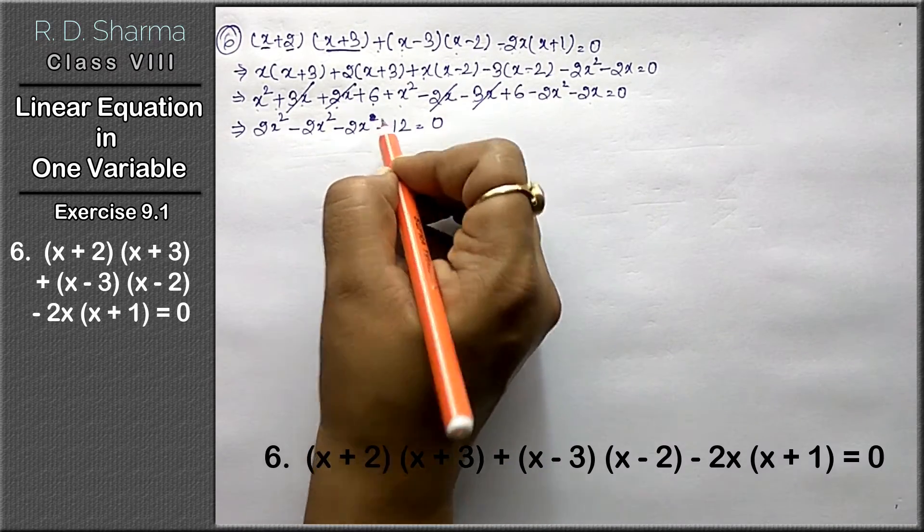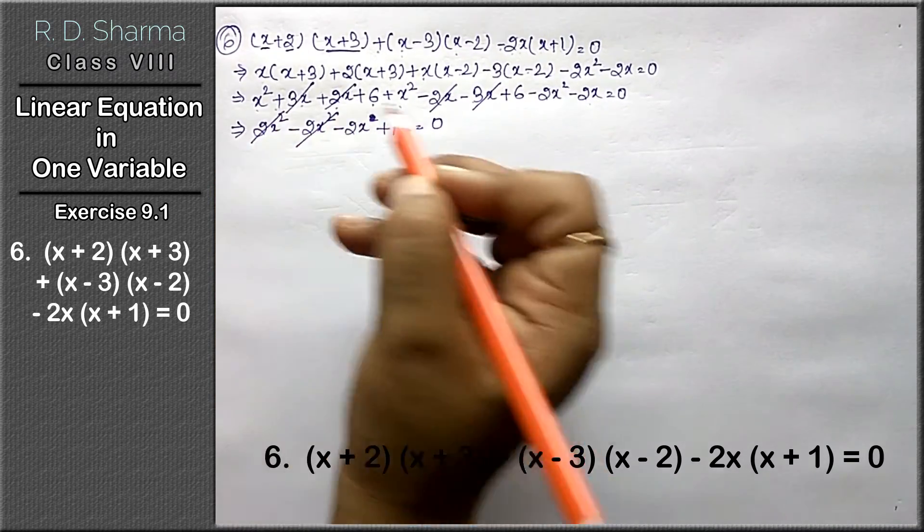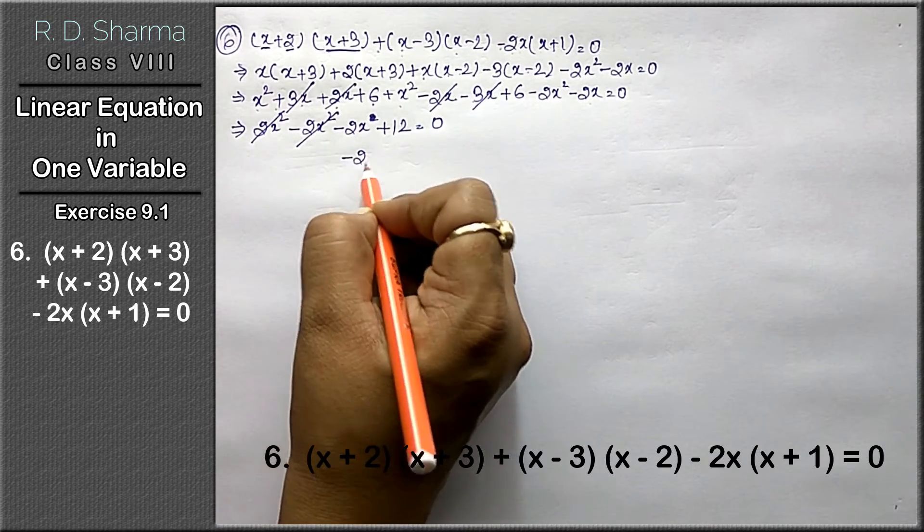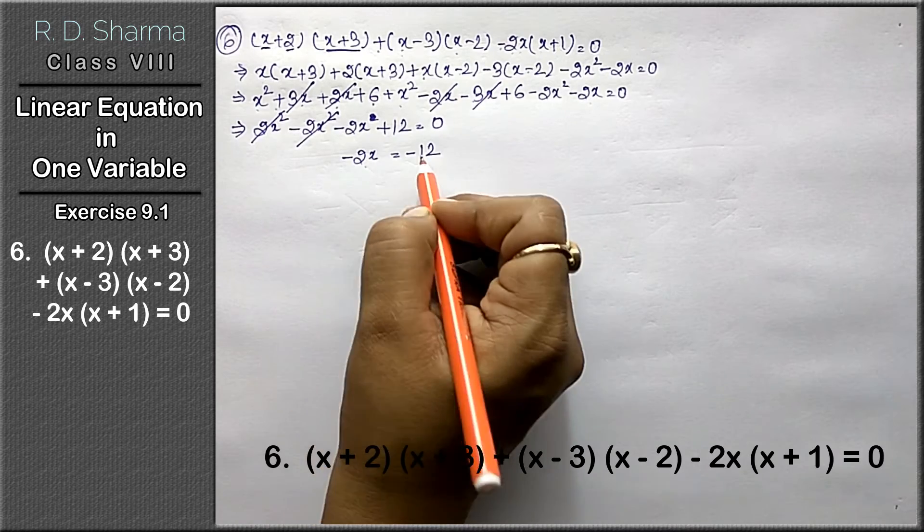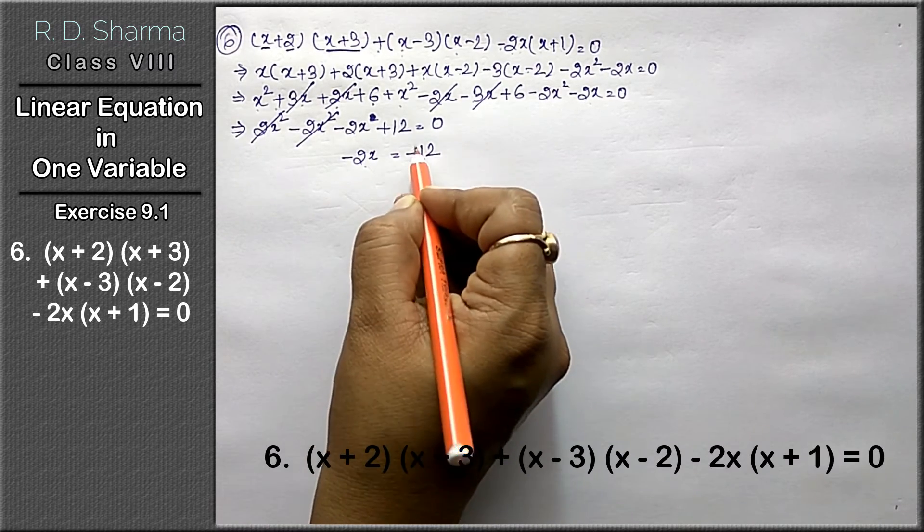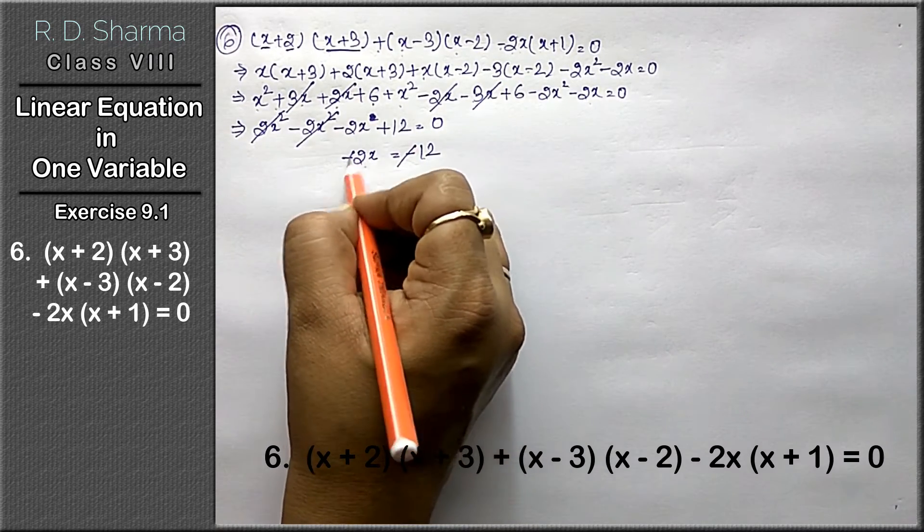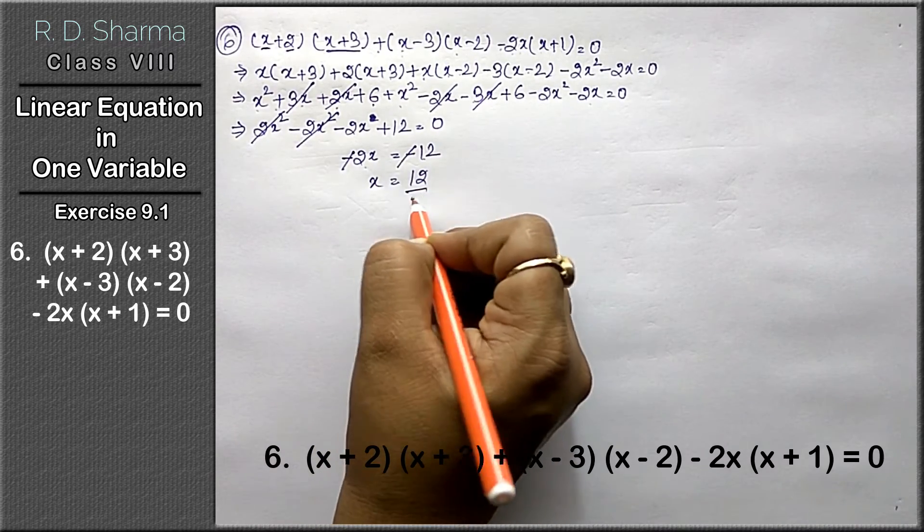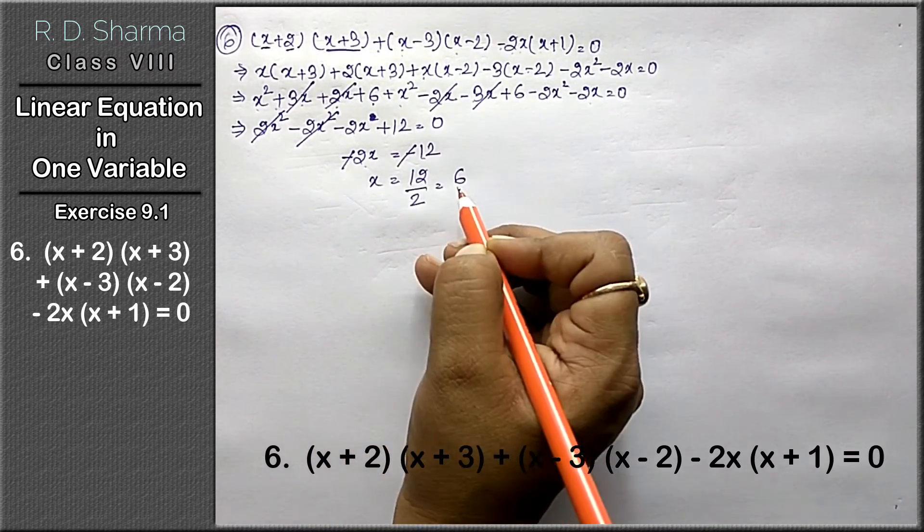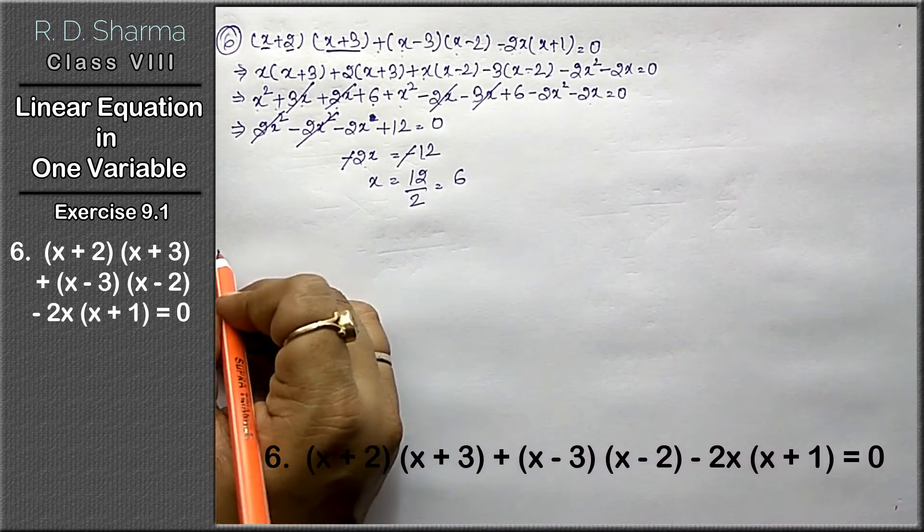2x² will get cancelled. Minus 2x equals to minus 12. Minus signs cancel, so x equals 12 divided by 2, that is 6. This is the answer. Now we will verify.